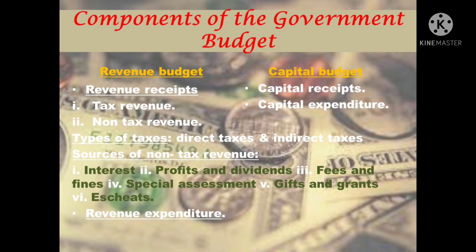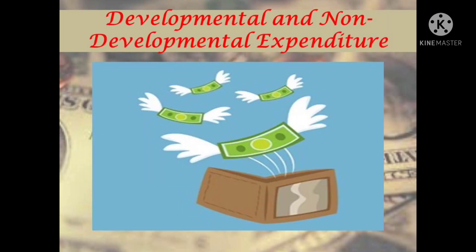Acquisitions of assets like land, machinery, and equipment are examples of capital expenditure. Next, developmental expenditure and non-developmental expenditure: Developmental expenditure is the expenditure on activities directly related to economic and social development of the country. This includes expenditure on education, health, agriculture, roads, transport, etc. Non-developmental expenditure is the government's expenditure on essential general services of the government, including expenditure on defense, payment of old age pension, etc.